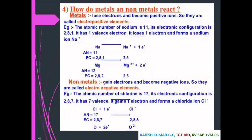How metals and non-metals react: metals lose electrons and become positive ions, so they are called electropositive elements. For example, sodium has atomic number 11 and electronic configuration 2,8,1 — it has one valence electron, loses it, and forms Na⁺. Magnesium has atomic number 12 and configuration 2,8,2 — it loses two electrons and forms Mg²⁺.